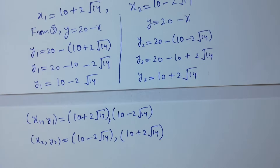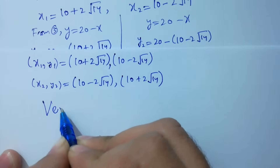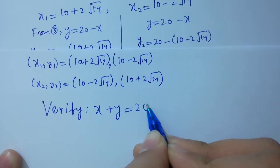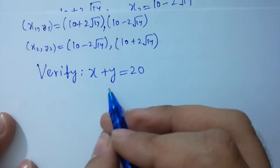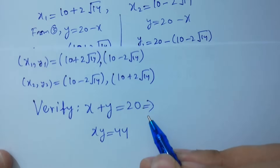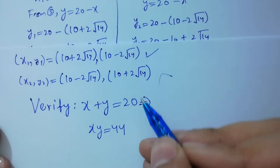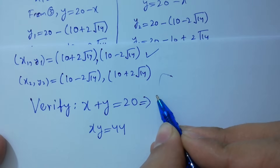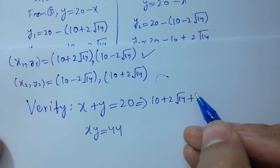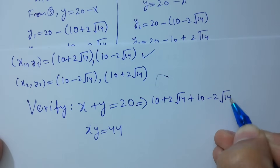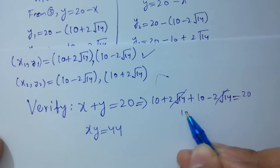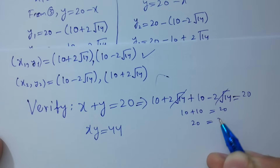Let's verify x plus y equal to 20 and x times y equal to 44. Put the values of x1 and y1: x1 is 10 plus 2 square root of 14, plus y1 is 10 minus 2 square root of 14. The 2 square root of 14 terms cancel, leaving 10 plus 10 equal to 20. So 20 equal to 20, verified.